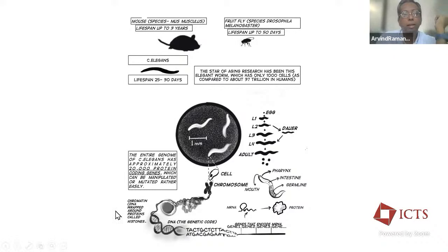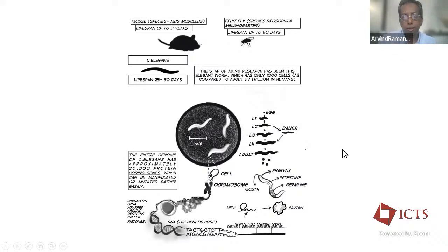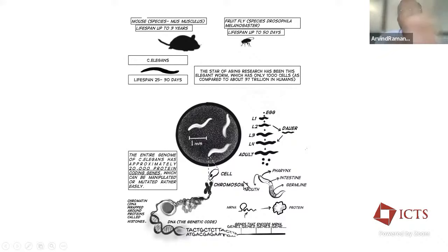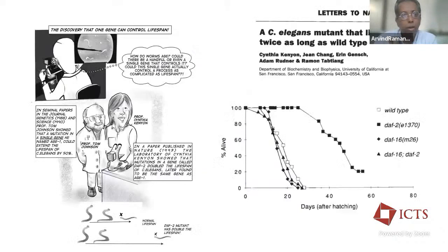Lifespan is very hard to study — you can't accelerate time. The real hero of lifespan studies is C. elegans, which has numerous life stages and can enter a suspended animation called the dauer state. This animal has been extremely useful for understanding genetic programs that regulate aging. It's a simple one-millimeter-long worm that lives just a few weeks, has only around 20,000 protein-coding genes, and can be very easily genetically manipulated.